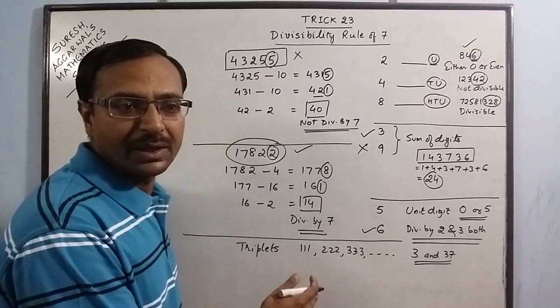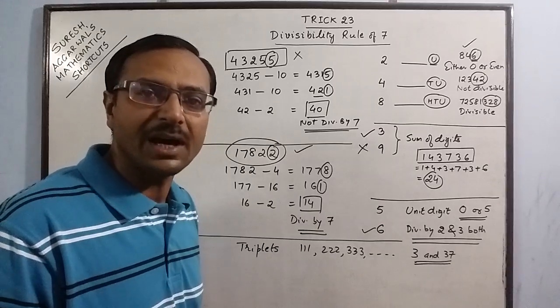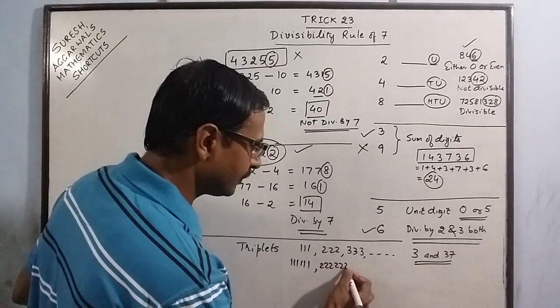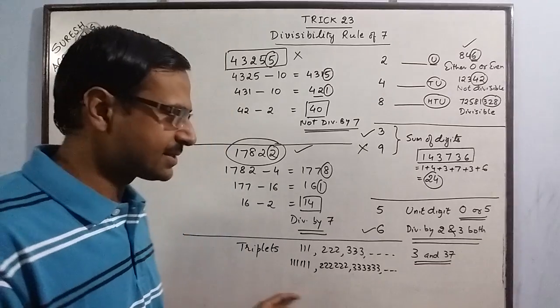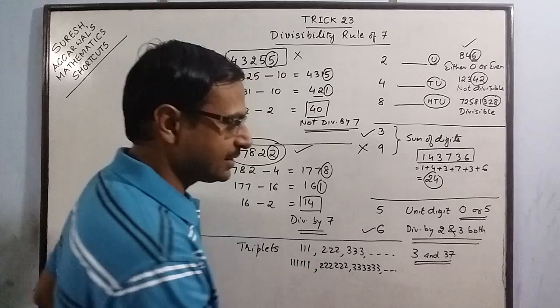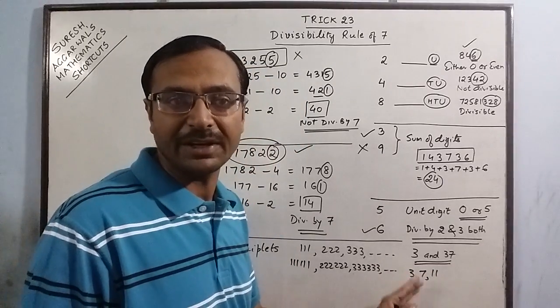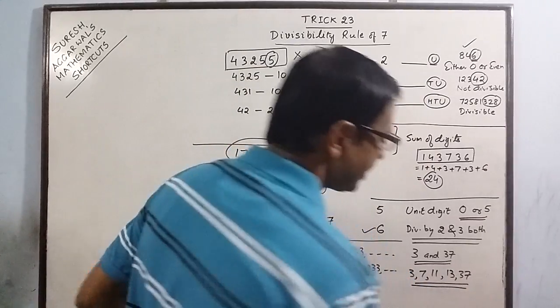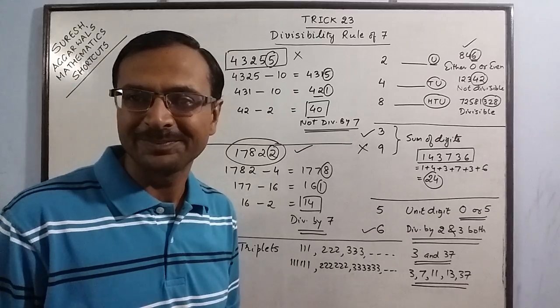Similarly, when we have numbers consisting of 6 digits and all digits are same, say we have triple 1 triple 1, triple 2 triple 2, triple 3 triple 3, and so on. Now here we have 6 digits all repeated, so we have 5 factors here: 3, 7, 11, 13, and 37. These are the 5 essential factors of all numbers which have 6 digits repeated in them.